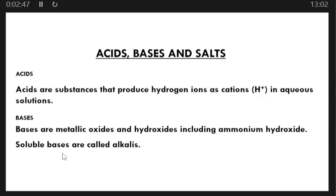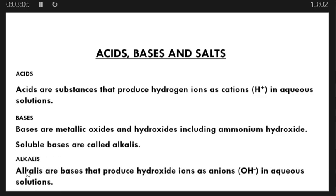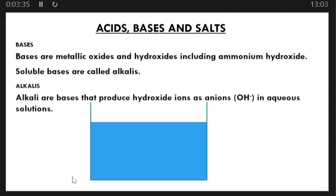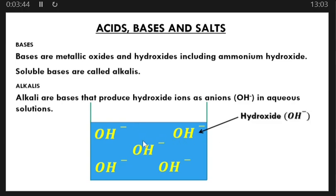Soluble bases are called alkalis. If a base is added to water and it is able to dissolve, then that base is also known as an alkali. Alkalis are bases that produce hydroxide ions as anions in aqueous solution. If a base is added to water and produces hydroxide ions as the only negatively charged ions, then that substance is a soluble base and is an alkali.